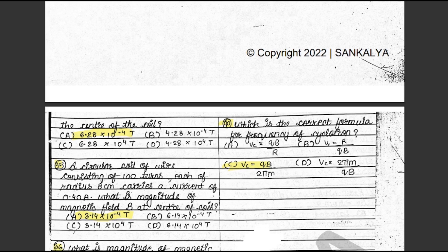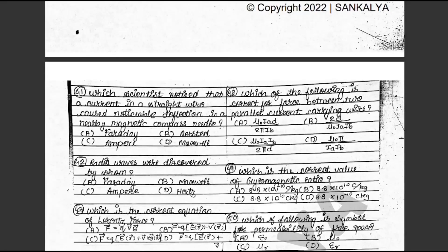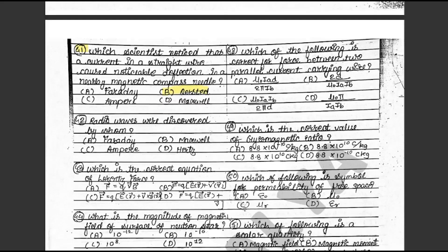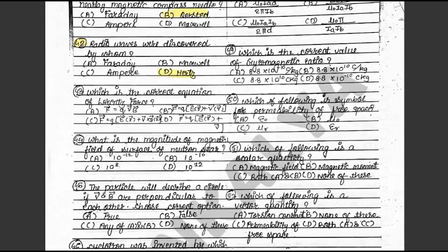Question 41: Which scientist noticed that a current in a straight wire caused noticeable deflection in a nearby magnetic compass? The answer is B: Oersted. This is on textbook page 132. Question 42: Radio waves were discovered by whom? The answer is D: Hertz. This is on textbook page 133.